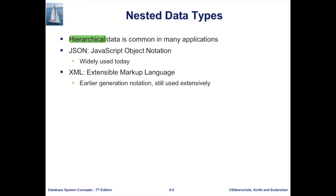JSON, which stands for JavaScript Object Notation, is widely used today especially in web applications. Whenever an object is passed from one component of the system to another — back end to front end, front end to back end — and when endpoints are exposed as an API, usually JSON objects are passed. XML is somewhat older than JSON but is still used today.